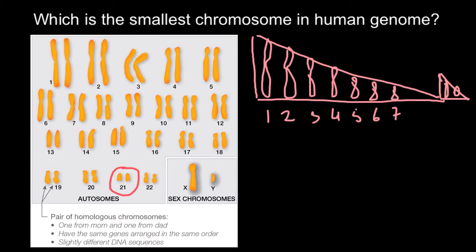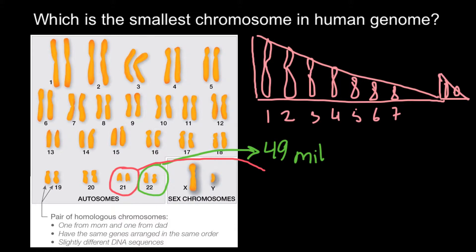Actually, the smallest chromosome in the human karyotype is chromosome 21. This happened because before the start of the Human Genome Project, geneticists thought the smallest chromosome was chromosome number 22. But after the Human Genome Project started in the 1990s, chromosome number 22 was sequenced first, and scientists found it contains 49 million bases. When they sequenced chromosome 21, they found it has only 48 million bases.